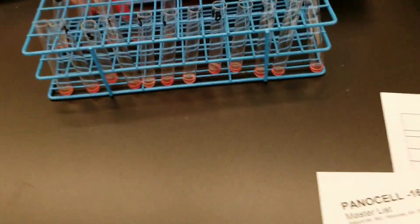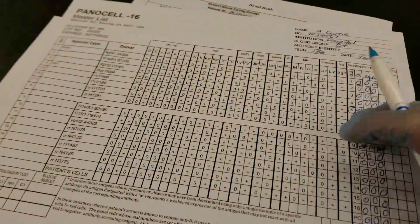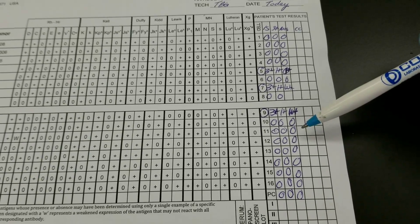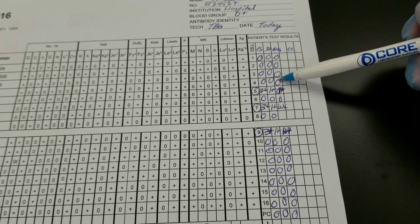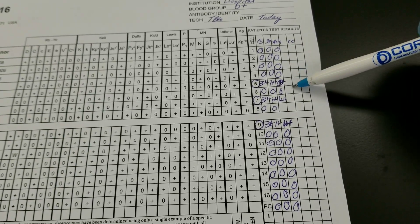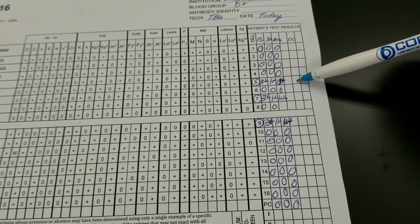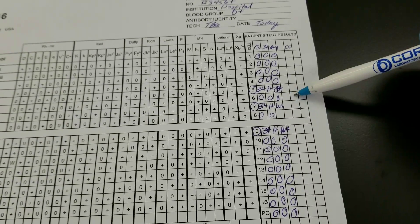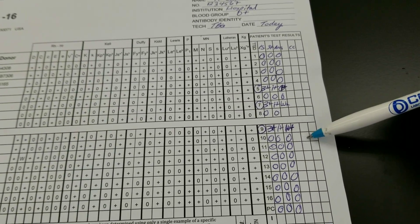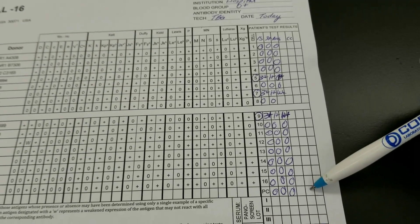I put 9 back at weak because it wasn't really that big of an agglutinate. All of these, 1 through 4, are negative and they're going to need check cells. Number 5 was positive, so we don't do that. 6 was negative and we'll do check cells. 8, same thing. 10 through the auto control are all going to get check cells. So let's do that.